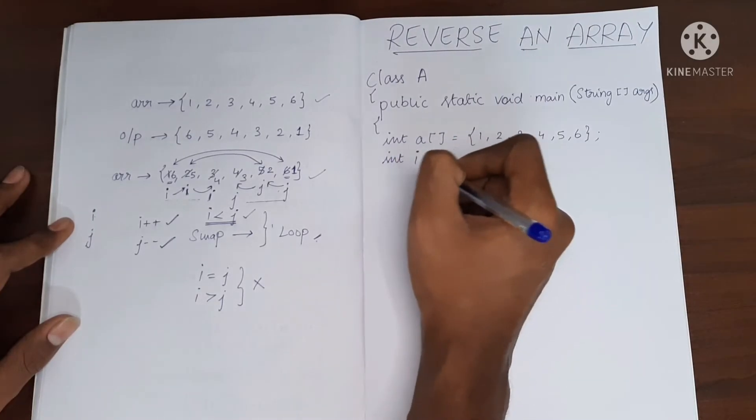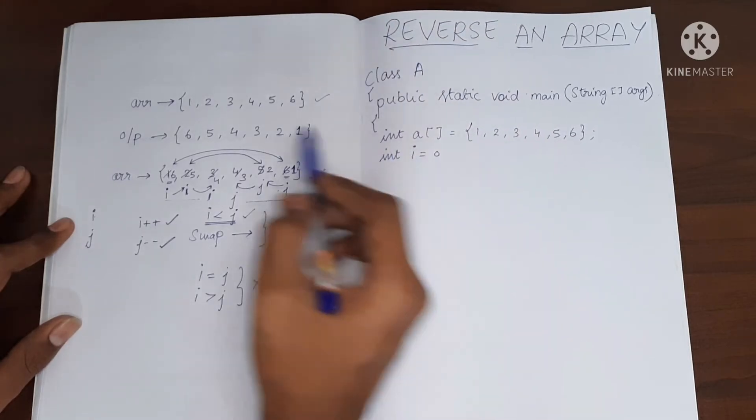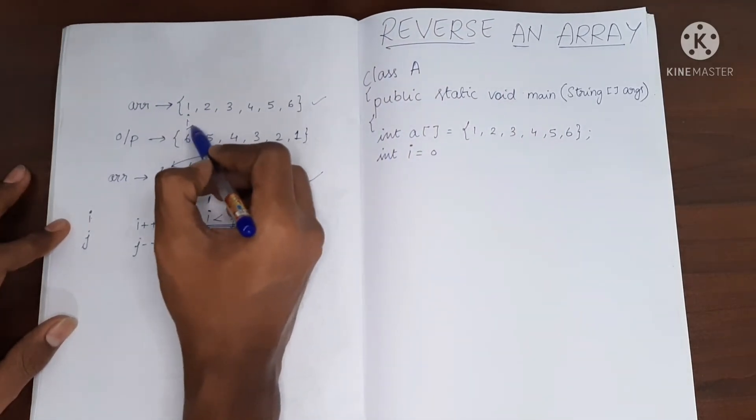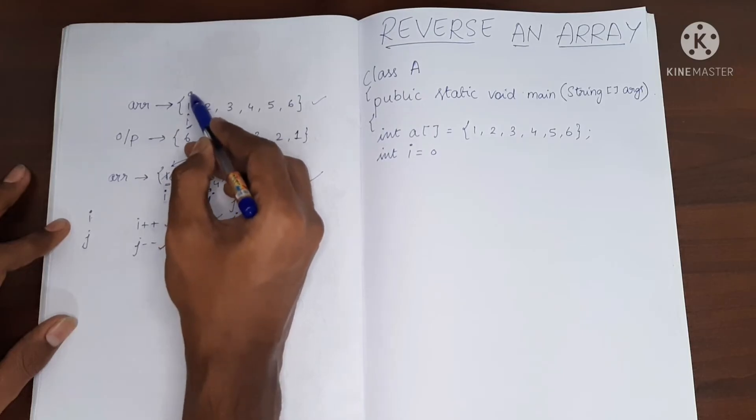I initialize i to be zero because I'm going to use i to point to the first element in the array. The index of course is zero.